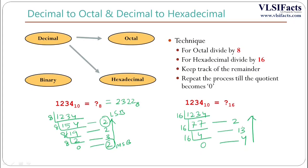Collecting the remainders from bottom to top: 4, then 13 (written as D in hexadecimal), then 2. So the final hexadecimal equivalent of 1234 is 4D2.